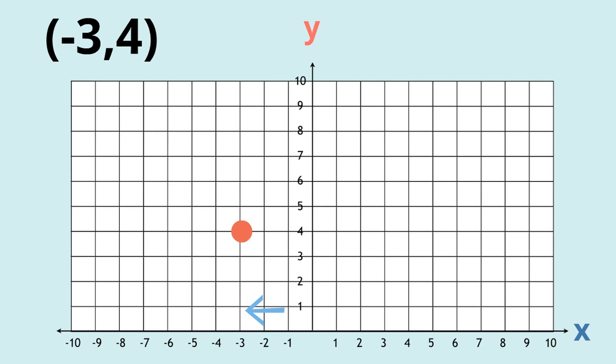So we go -1, -2, -3, and then same as before we go up the y-axis until we hit four. So one, two, three, four and this is where the two points meet.